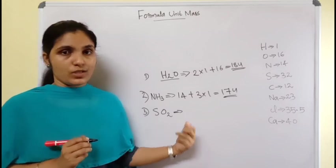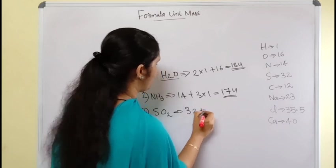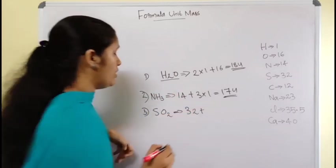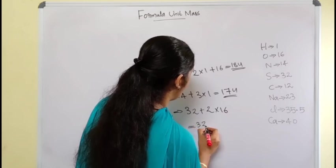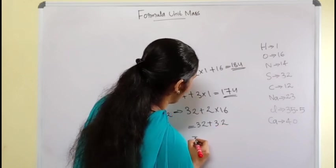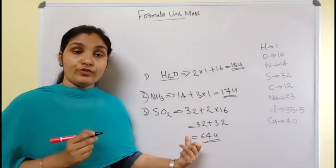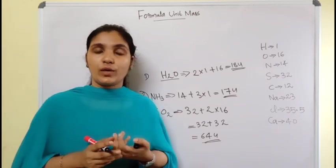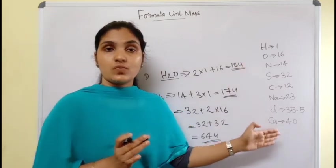The third compound is sulfur dioxide, SO₂. Sulfur has an atomic mass of 32, and oxygen has 16 u per atom. So: 32 + 2 × 16 = 32 + 32 = 64 u. The formula unit mass of SO₂ is 64 u. This is the pattern we follow to calculate the formula unit mass of different substances.